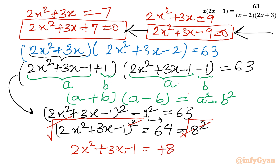We now have the same two equations as before with plus and minus 8. For plus 8: 2x squared plus 3x minus 1 equal to 8 gives 2x squared plus 3x minus 9 equal to 0 (the second quadratic). For minus 8: 2x squared plus 3x minus 1 equal to minus 8 gives 2x squared plus 3x plus 7 equal to 0 (the first quadratic). Let us solve both quadratic equations.